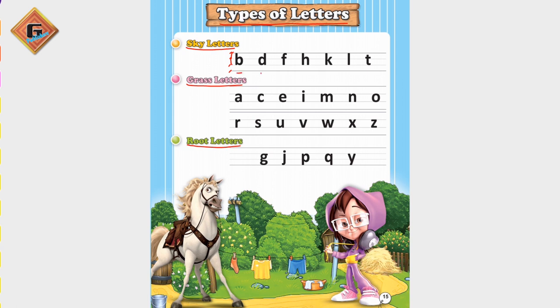The sky letters are: B, D, F, H, K, L, and T.